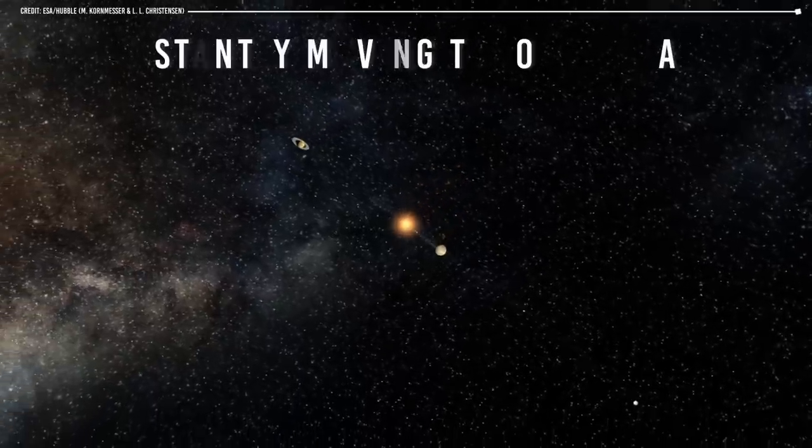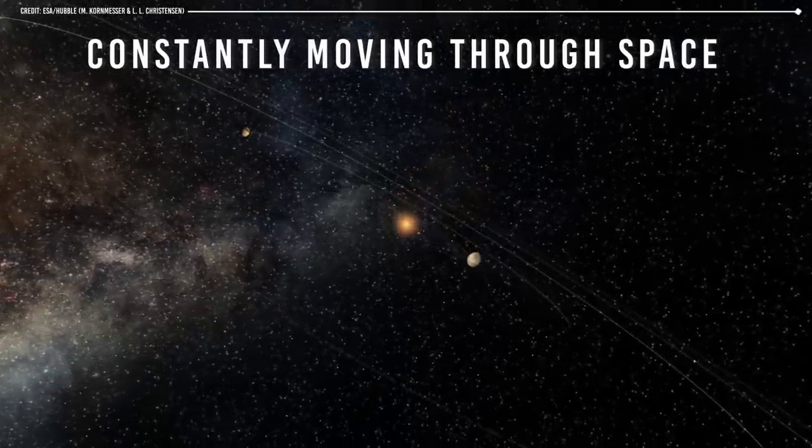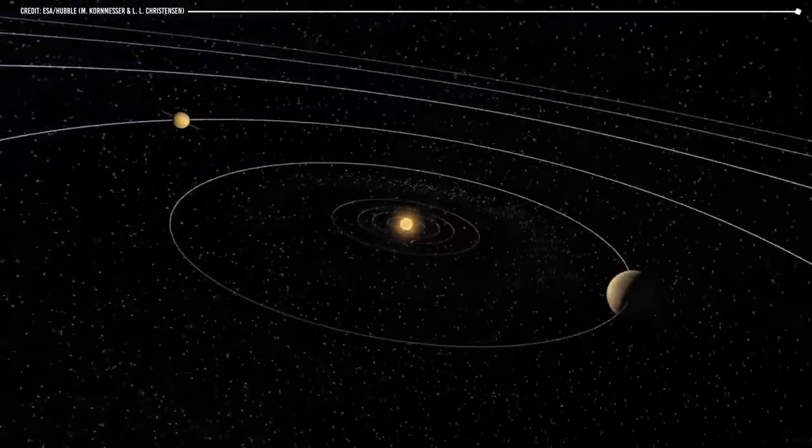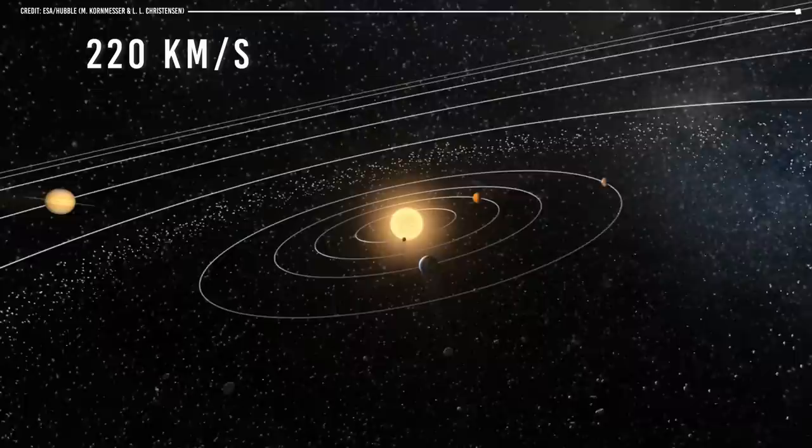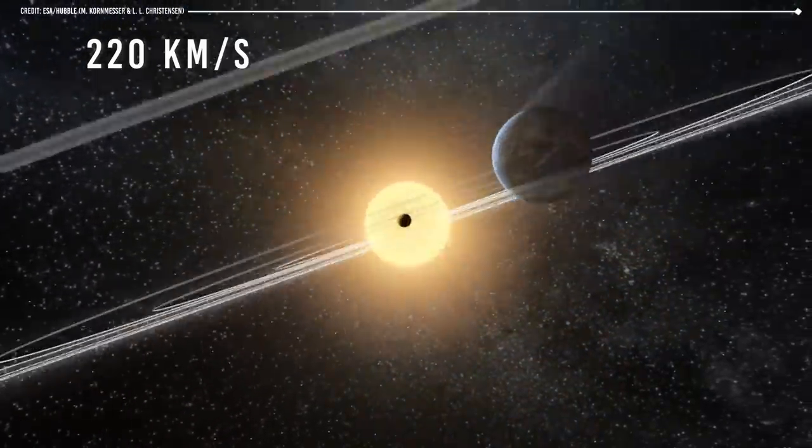First, it's important to note that stars are constantly moving through space. Our Sun is also moving, and it's currently orbiting the center of the Milky Way galaxy at a speed of about 220 kilometers per second.